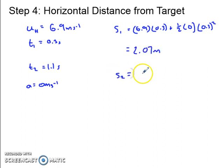Alright, S2 equals UT, so 6.9, this time times 1.1, plus half times acceleration, times 1.1 squared. And we're going to get 6.9 times 1.1, 7.59 metres.